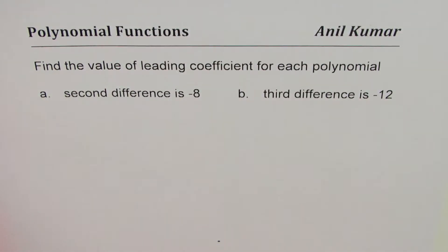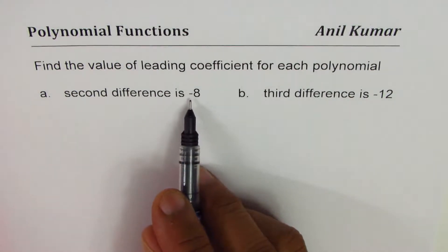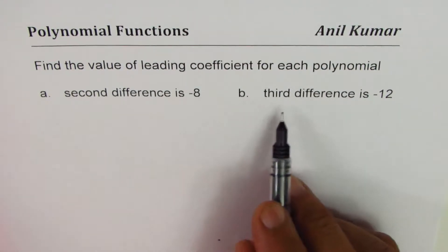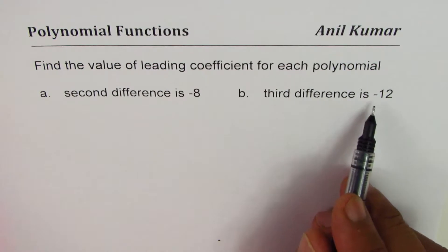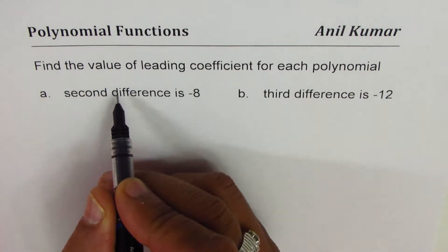Anil Kumar. In this video we are going to explore the relation between finite difference, leading coefficient, and degree of the polynomial function. The question here is: find the value of leading coefficient for each polynomial. Part a: second difference is -8. Part b: third difference is -12. So when I say second difference, I really mean second finite difference.